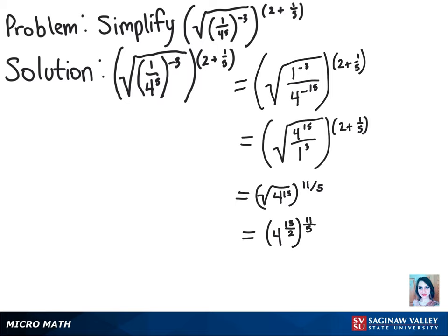So we can multiply those exponents based on the property of exponents. To make it easier, we can cross-cancel the 15 being 3 and the 5 being 1 when we divide them both by 5. And that will give us 4 raised to the power of 33 halves.